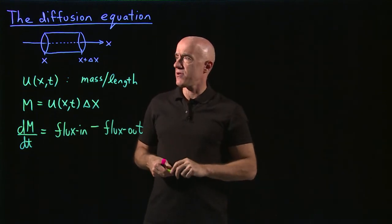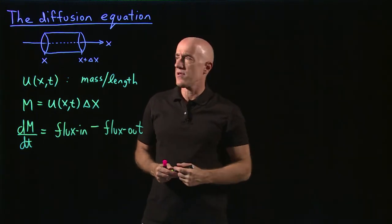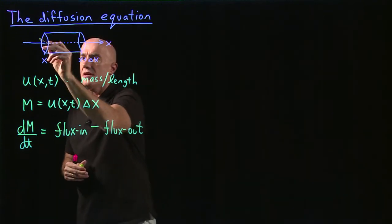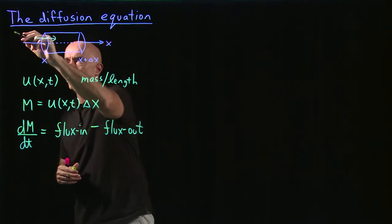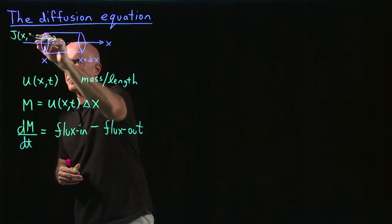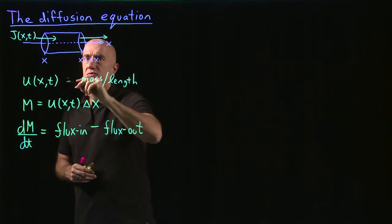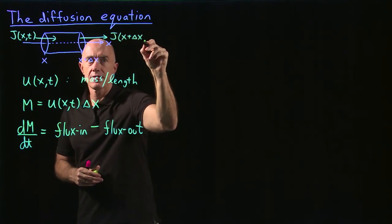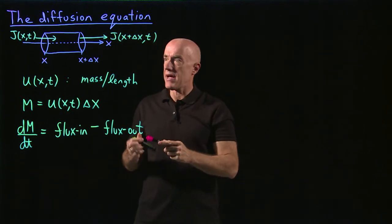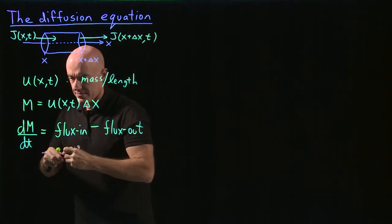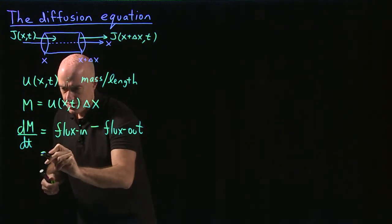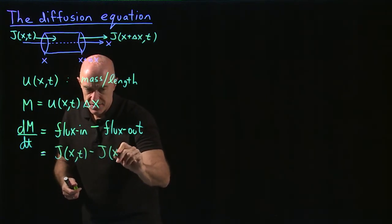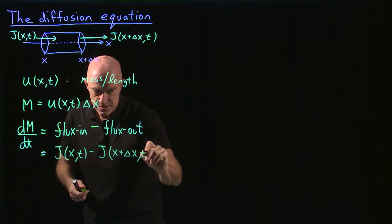What we need now is a model for the flux. The flux in the positive x direction — let's call that j(x,t). And the flux out is j(x + delta x, t). So the flux in minus the flux out is this difference: j(x,t) minus j(x + delta x, t).